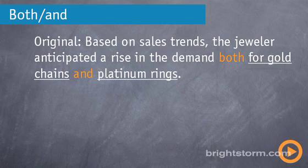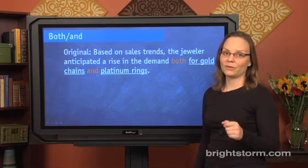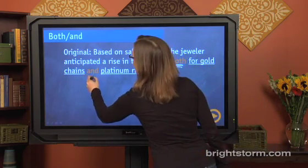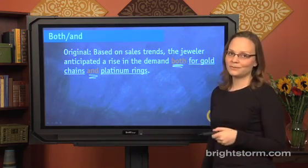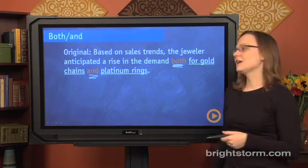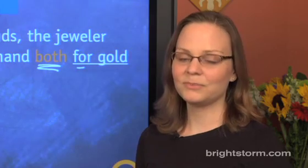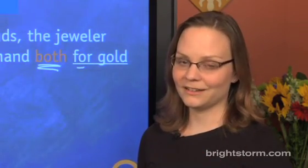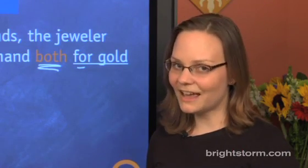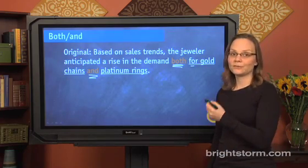First up, the B in banana: both and. Here's a sentence that's flawed because it's lacking proper parallelism. Based on sales trends, the ruler anticipated a rise in the demand both for gold chains and platinum rings. First, we recognize that we're dealing with parallelism by noticing 'both and'. So we check the two pieces being connected. The first piece is 'for gold chains' — that's a prepositional phrase because it starts with the preposition 'for'. Check out the bonus materials for more on prepositional phrases, because the knowledge underlying the terminology is tested on the SAT.